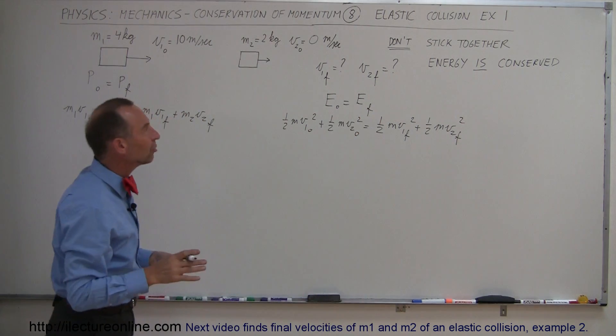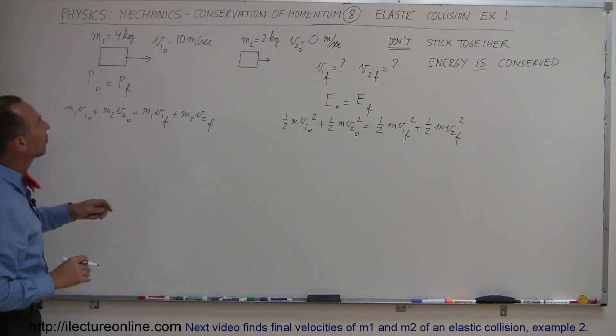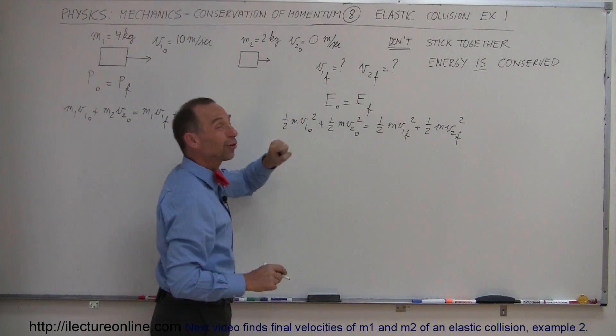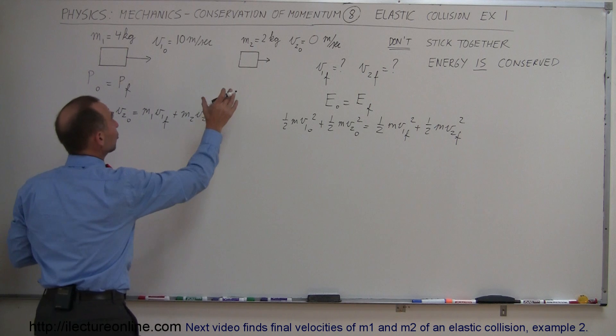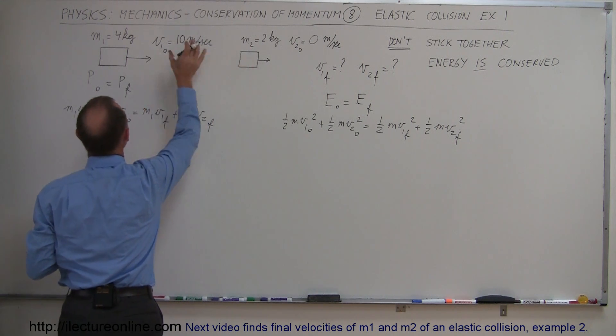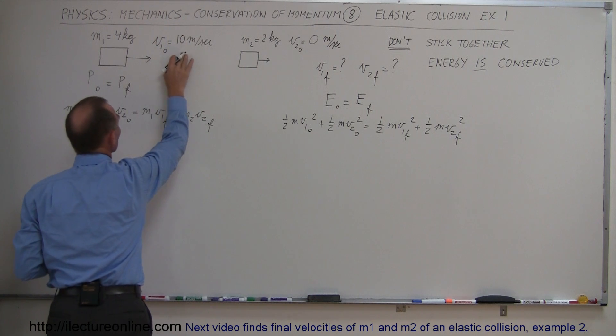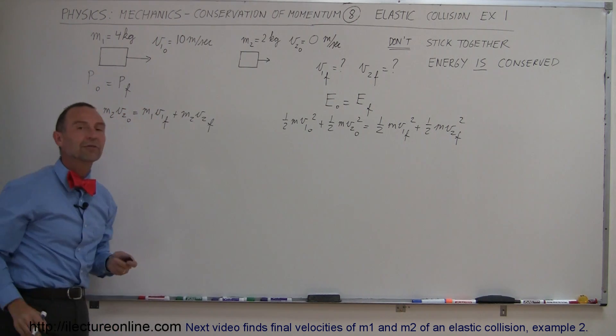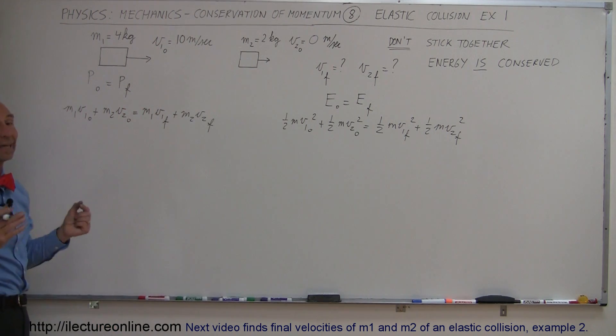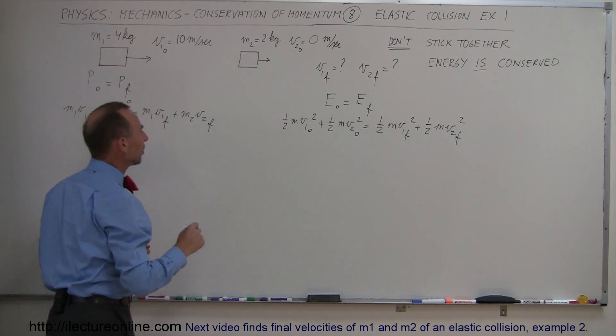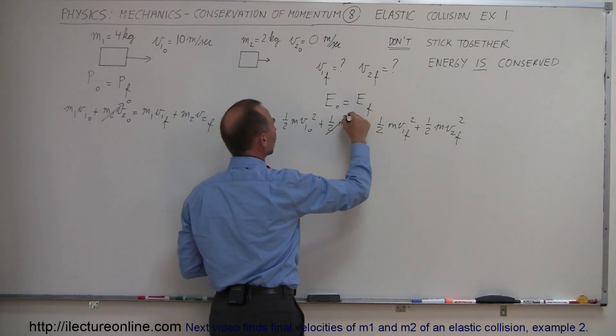Now, to make the problem a little bit easier the first time through, I let the velocity of the second block be zero before the collision. So here we have a stationary block mass 2 kilograms being hit from behind by a 4 kilogram block moving at 10 meters per second. And let's find out what their final velocities are after the collision, assuming that energy is conserved. They don't stick together.